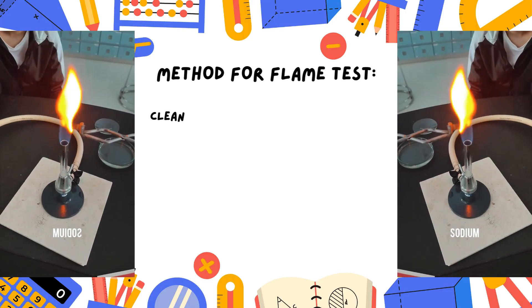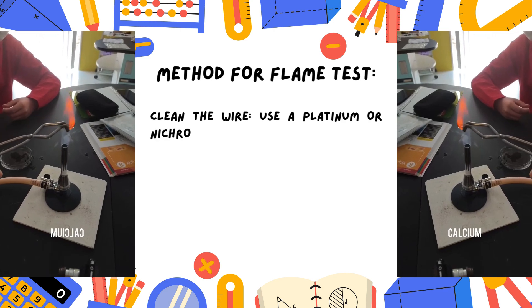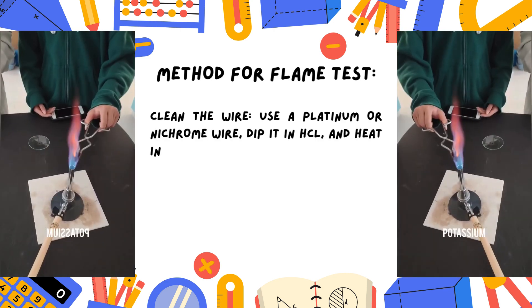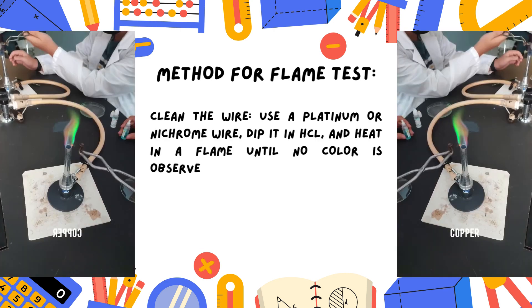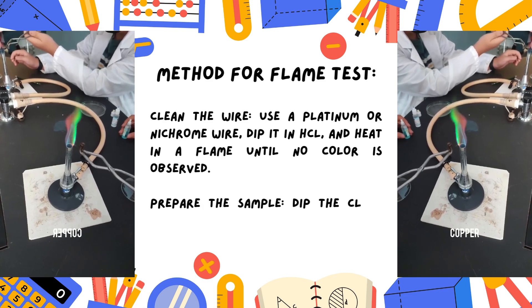Method for flame test. Clean the wire. Use a platinum or nichrome wire. Dip it in HCl and heat in a flame until no color is observed.